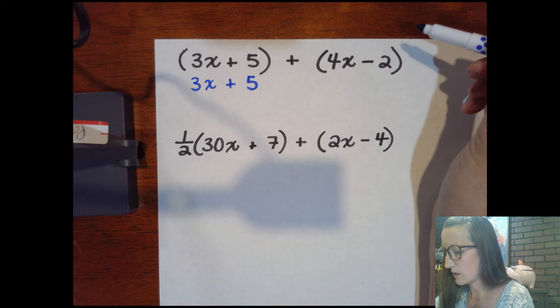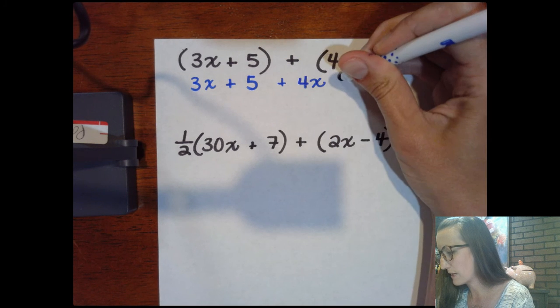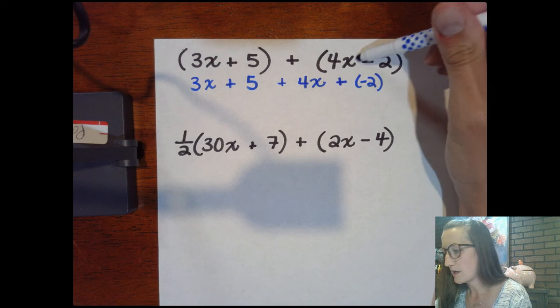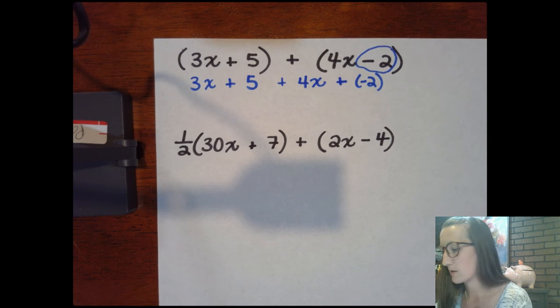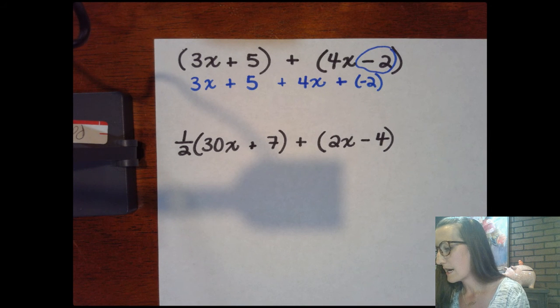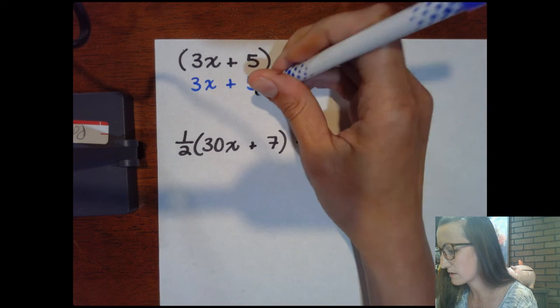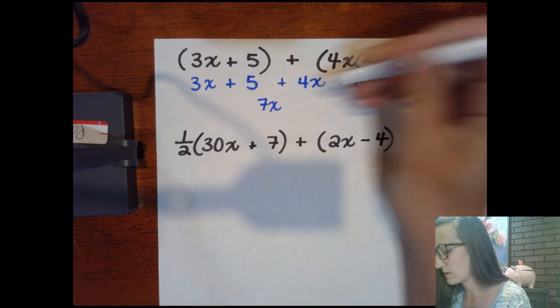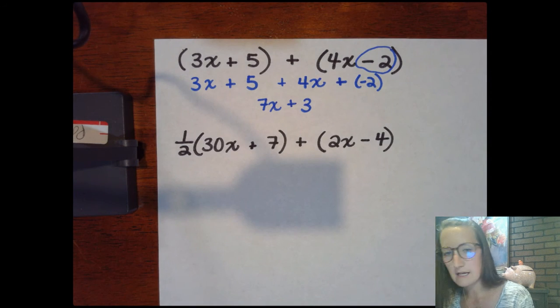So this would be like plus 4x plus a minus 2. Now where did I get minus 2 from? We have to remember that that term includes the sign in front of it. That will be important for getting the right numbers, the right final answers. And now it's just up to us to do what we know about like terms. So 3x plus 4x gives us 7x, and plus 5 minus 2 gives us plus 3. So final answer 7x plus 3. And that's very similar to what we did last week.